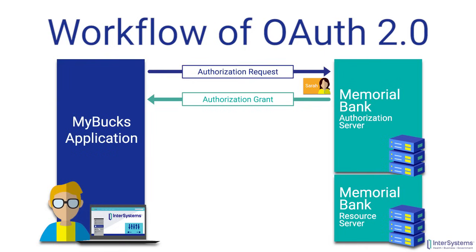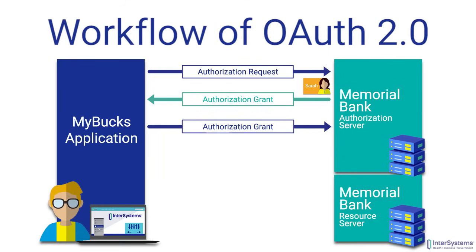MyBucks is going to take Sarah's authorization grant, including the authorization code, and use it to request an access token from the authorization server at Memorial Bank. Note that none of Sarah's protected resources — her account balances or information — are located on the authorization server. This server is only responsible for authorizing Sarah as a user and providing the proper access token that will eventually allow MyBucks to retrieve her protected info from the resource server. After accepting the authorization grant and code, Memorial Bank's authorization server provides MyBucks with an access token specifically for Sarah. This token provides MyBucks with access to only the two things Sarah granted permission to see: her account balances and her transaction history.